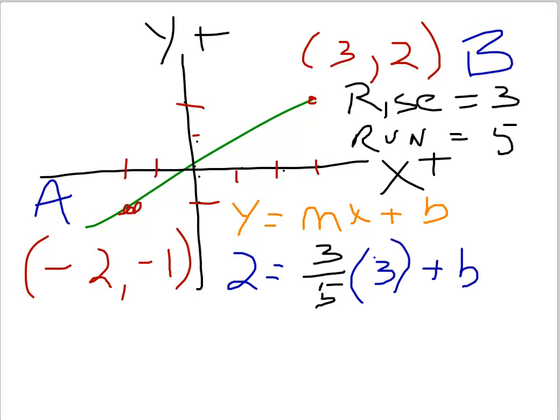So using our clearing fractions technique, we place our LCM five outside. And we see that we've got ten is going to equal, and the fives are going to make a one, so three times three is nine plus five B. So as we subtract nine, we see that five B is one and therefore B is one fifth.